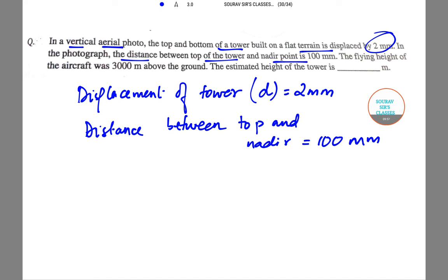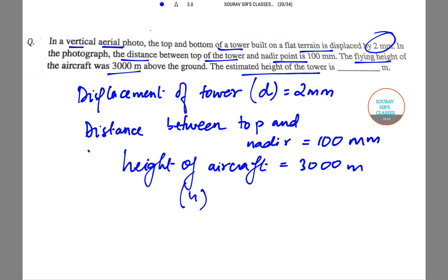The flying height of aircraft is 3000 m above ground. What we need to find is the estimated height of the tower. If I denote aircraft height by capital H and tower height by small h, we need to find h.